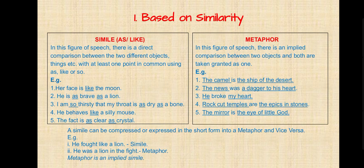A simile can be compressed into a metaphor and vice versa. Example: 'He fought like a lion' — here we use the word 'like,' so this sentence is a simile. But if we write the same thing as a metaphor: 'He was a lion in the fight,' meaning he fought like a lion. So metaphor is an implied simile.